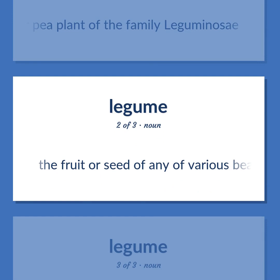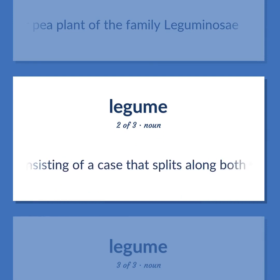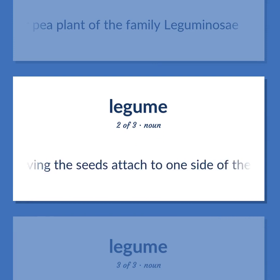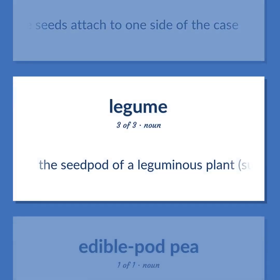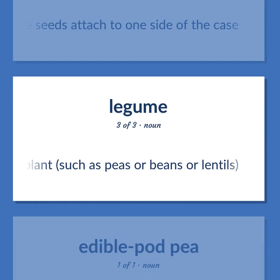The fruit or seed of any of various bean or pea plants, consisting of a case that splits along both sides when ripe and having the seeds attached to one side of the case. The seed pod of a leguminous plant, such as peas, beans, or lentils.